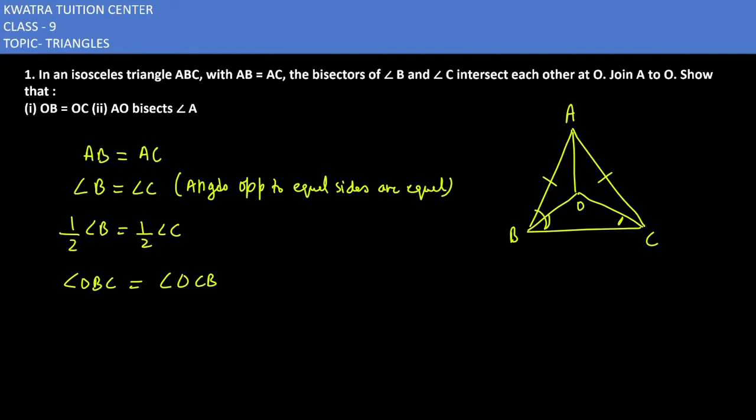Now when we have two angles equal between these small triangles, we have OB and OC of the triangle. By sides opposite to equal angles, okay.